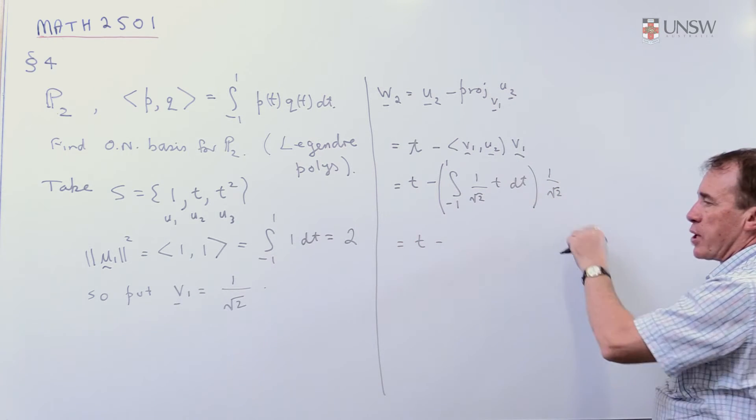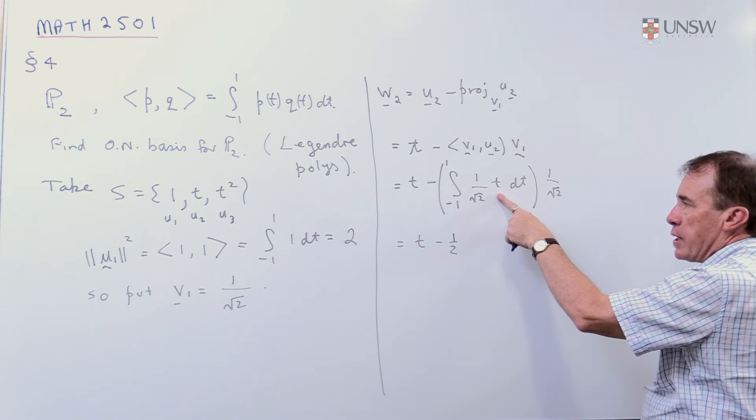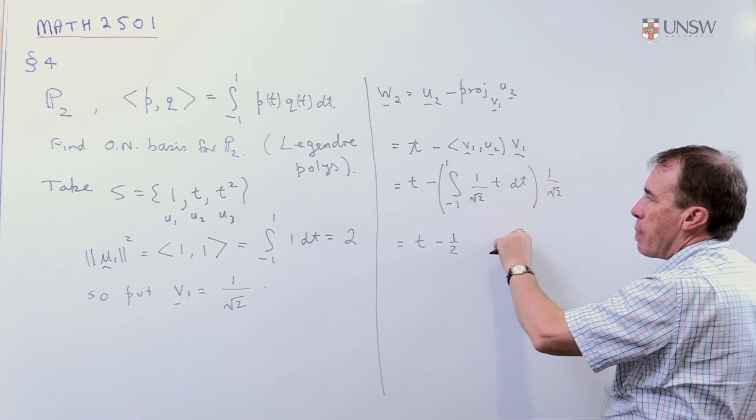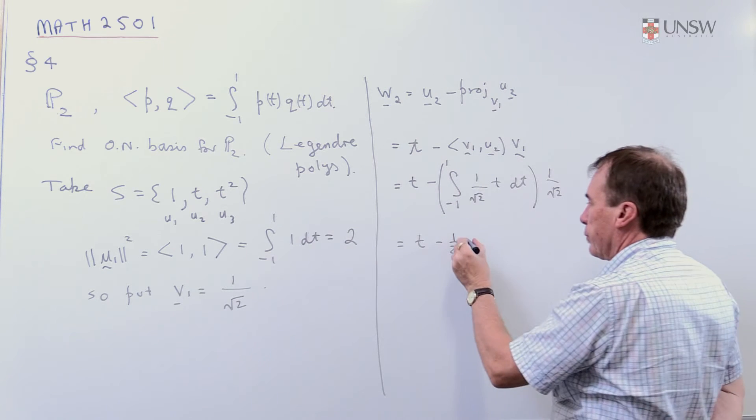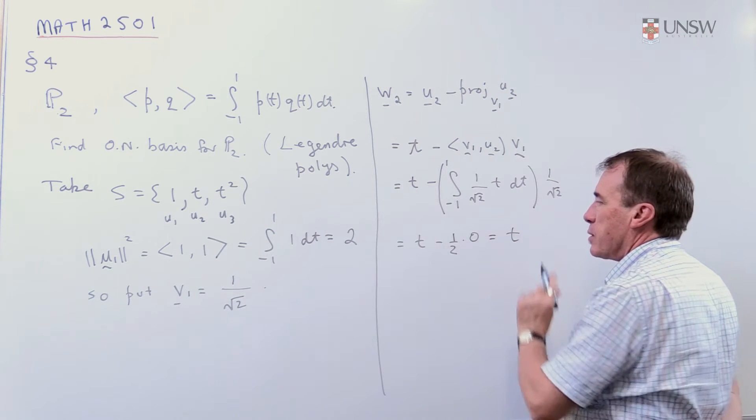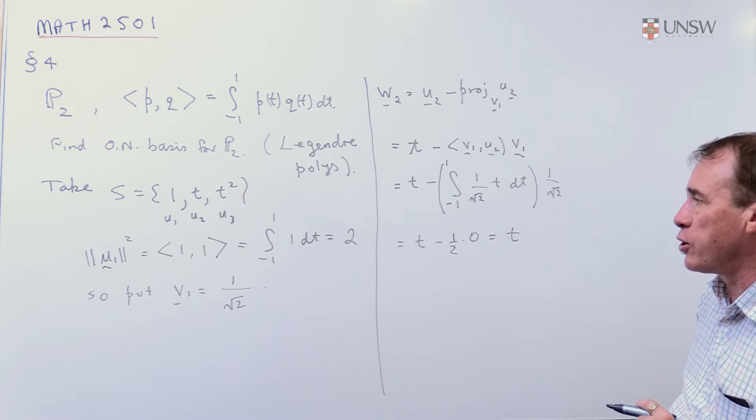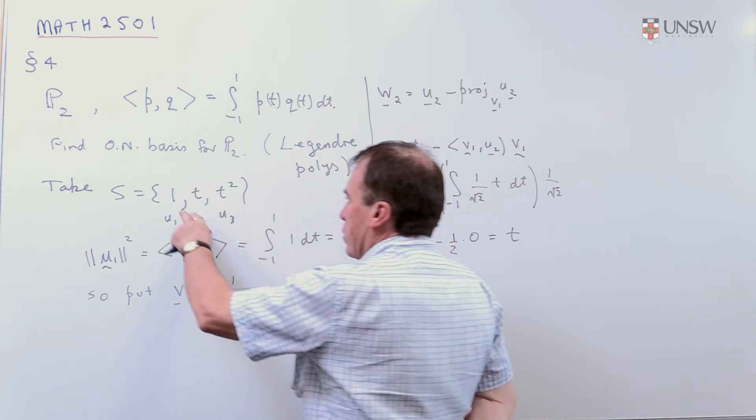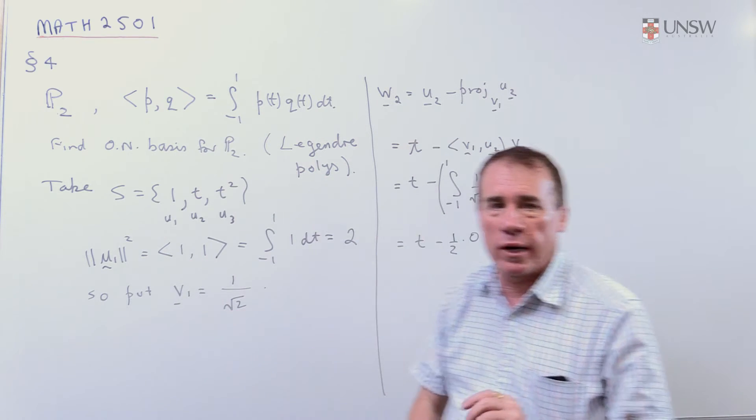Now, the 1 on root 2 has come out, I get a half. And if you integrate T from minus 1 to 1, you get 0. So I simply end up with T. So that's nice. So, in fact, it turned out that these two were, with respect to this inner product, these were already orthogonal.